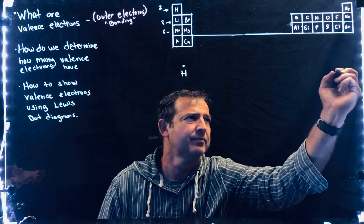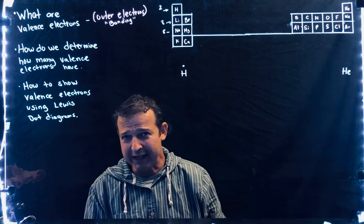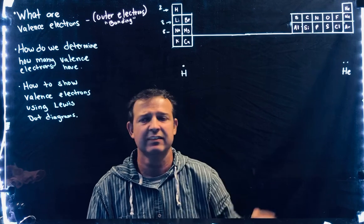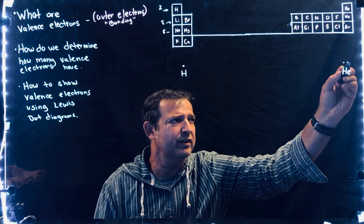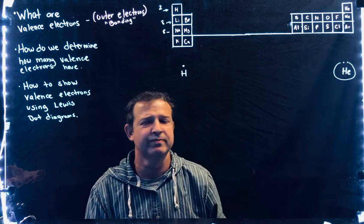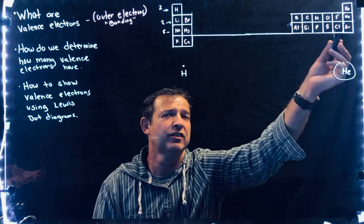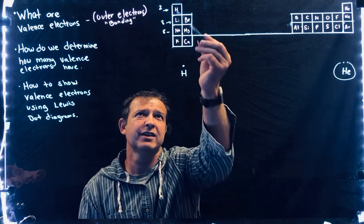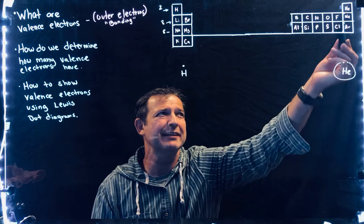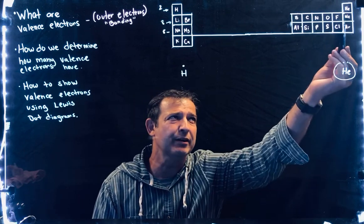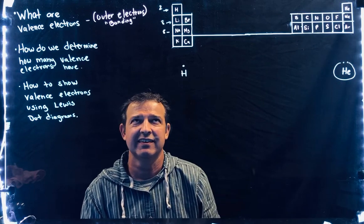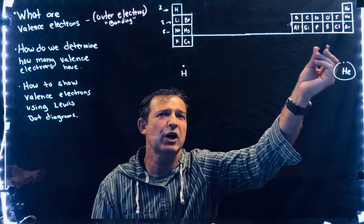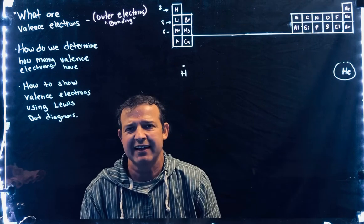Helium has an atomic number of two, so it has two electrons. Those two electrons constitute a full outer shell. In the first shell or first orbital, it can hold two. We know that because helium behaves like neon, and lithium and hydrogen behave alike. So in that first orbital it can hold two.